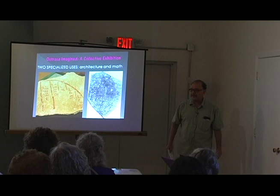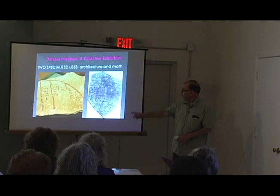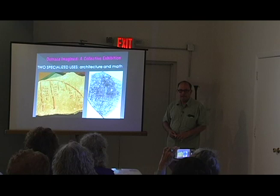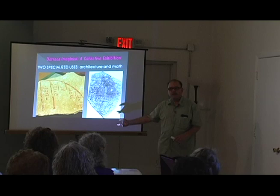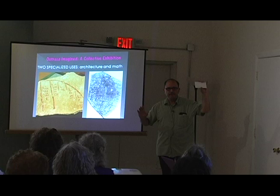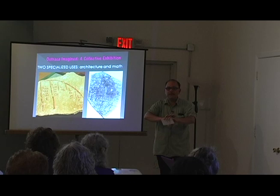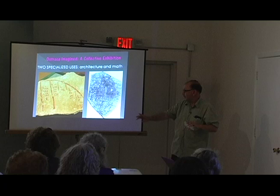We have one example from architecture and another example connected with geometry. This one is very interesting because it is a hybrid. There are some written text ostraka, some with drawings, but also we have this hybrid ostraka showing both text and drawings. This is a good example.